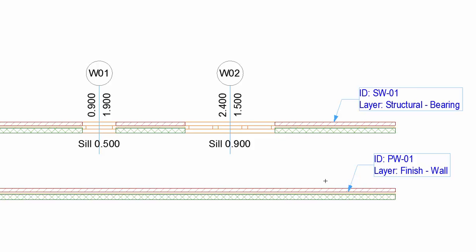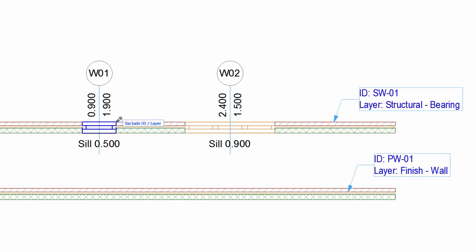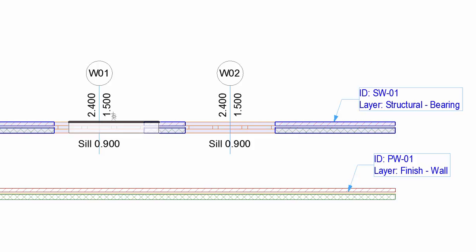Let's see another example. Pick up the parameters of the W02 window. Activate the Injection and add the parameters to W01 with the most recently used Exclude ID Layer set. As you can see, the type of the window and the dimensions have changed, but the ID is excluded.